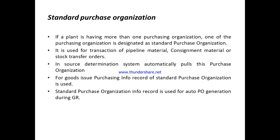There is also a scenario where the system auto-creates a purchase order automatically during GR posting. At that time, the system needs to determine the price to post the accounting entry. For that purpose, we maintain an info record for the material-vendor combination with the standard purchase organization. This is a prerequisite for auto PO creation. If you create the info record with other types of purchase organizations, the system will not determine the price during GR posting and will throw an error.